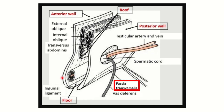Looking at the picture, here we can see the inguinal canal. It extends from the superficial inguinal ring to the deep inguinal ring. The anterior boundary is formed mainly by the external oblique and some other ligaments and fibers. The posterior wall is formed by the fibers of the fascia transversalis. So the mesh will be placed on the fascia transversalis, which forms the posterior wall of the inguinal canal.